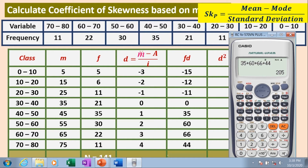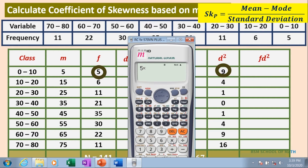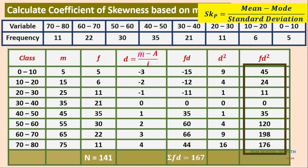Total positive sum 205 minus 38 gives ΣFD = 167. For the D² column: (−3)² = 9, (−2)² = 4, and so on. Computing FD² for each row — for example, 5 × 9 = 45 — and summing all values gives ΣFD² = 609.